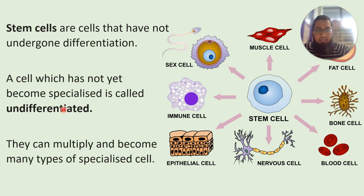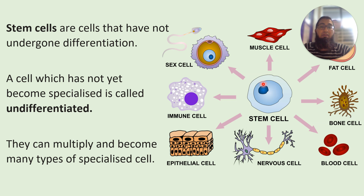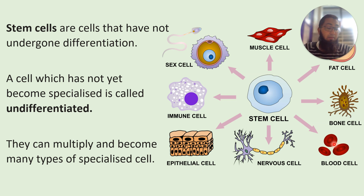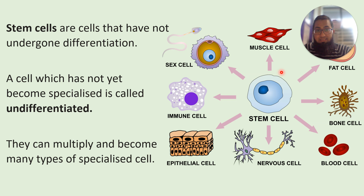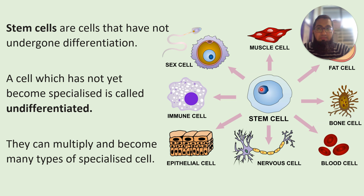This stem cell can differentiate — it can become a muscle cell if the body needs that, a white blood cell if you are unwell, an epithelial cell, or a nerve cell. It can become a red blood cell if you were anemic or had blood loss, form new bone cells, or become new fat cells. A cell that has not yet become something is called a stem cell — an undifferentiated cell.